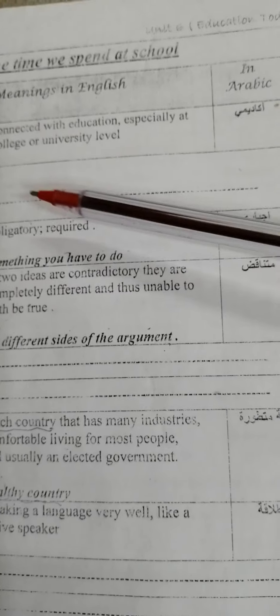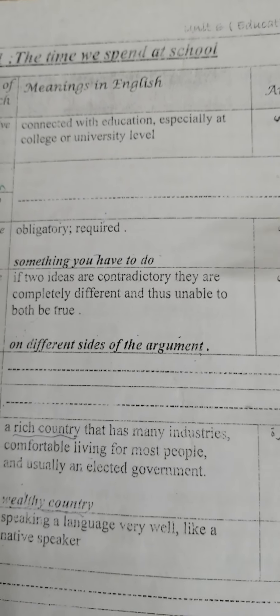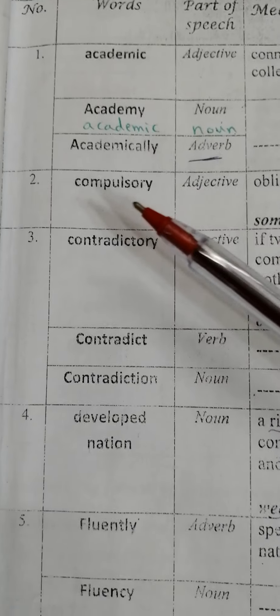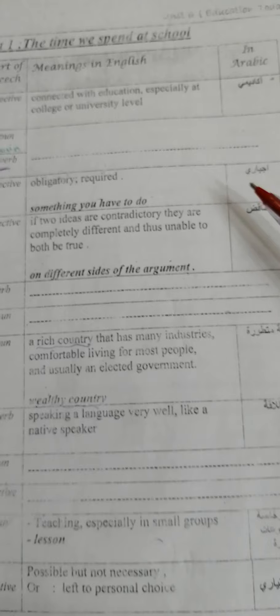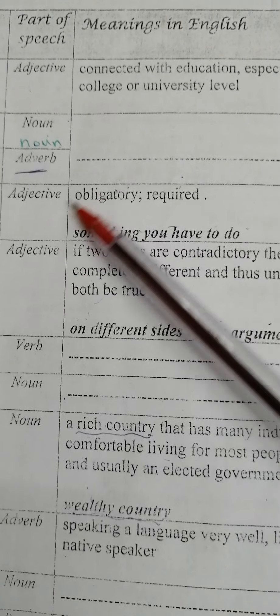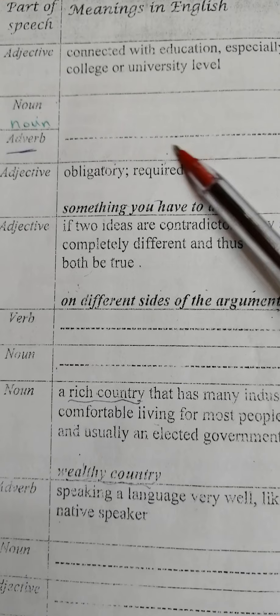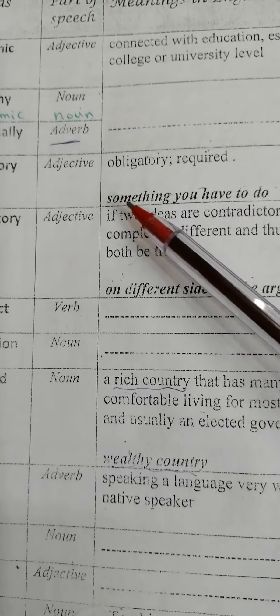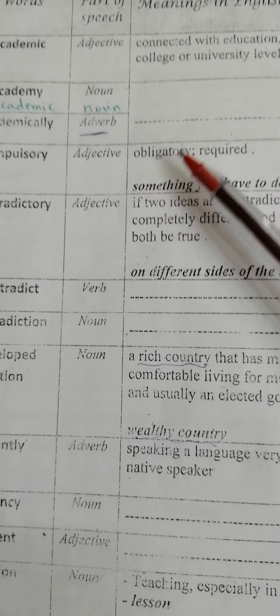'Compulsory' is also an adjective meaning إجباري أو إلزامي — obligatory, required. It means something you have to do. So it has three meanings: obligatory, required, and something you have to do.